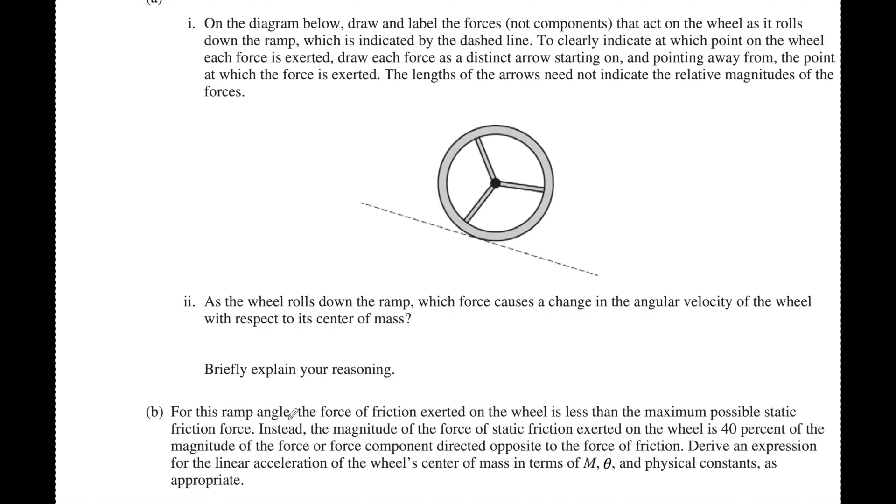Part b: For this ramp angle, the force exerted on the wheel is less than the maximum possible static friction force. Instead, the maximum force of friction exerted on the wheel is 40 percent of the maximum force or force component directed opposite to the force of friction. Derive an expression for the linear acceleration of the wheel's center of mass in terms of M, theta, and any other physical constants as appropriate. Okay, so I'm going to draw on here, not the free body diagram, I'm just going to draw what's going on that makes this thing accelerate.